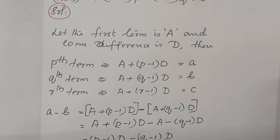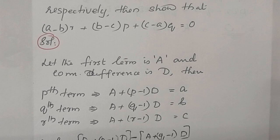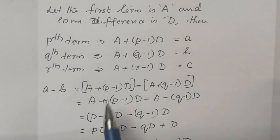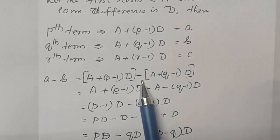In the question, they are asking (A minus B) into R plus (B minus C) into P plus (C minus A) into Q equal to 0. Therefore, first we have to find A minus B. A is given in the question as Pth term and B is given as Qth term in the question. Therefore, we are substituting the values of small letter A and B.